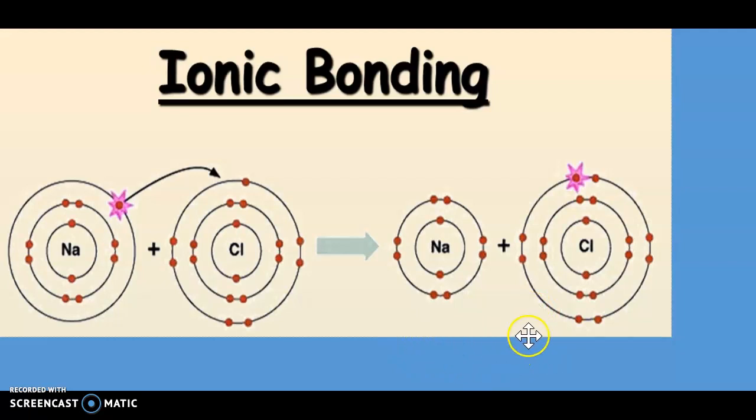Now because this is a bonding between a metal and a non-metal, it is called ionic bonding. Sodium becomes an Na+ ion, chlorine becomes a Cl- ion.